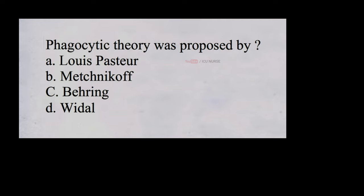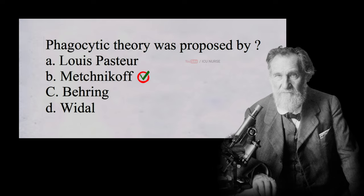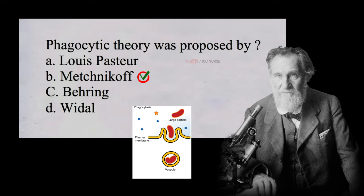Phagocytic theory was proposed by A. Louis Pasteur, B. Metchnikoff, C. Behring, D. Widal. And the correct answer is B, Metchnikoff. Metchnikoff discovered phagocytosis. Phagocytes are specialized cells that ingest and destroy bacteria.